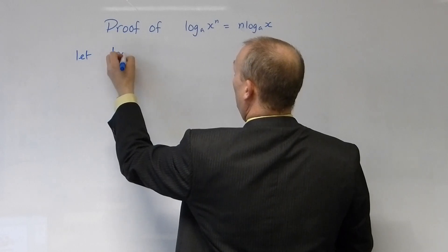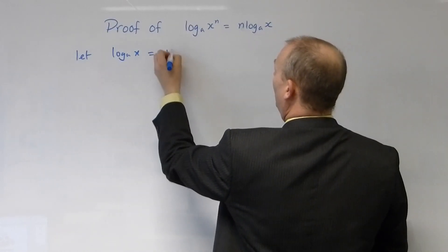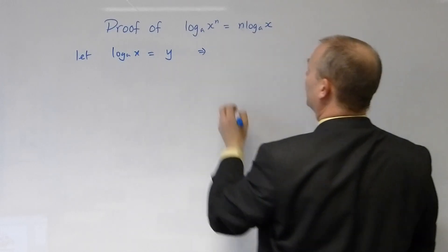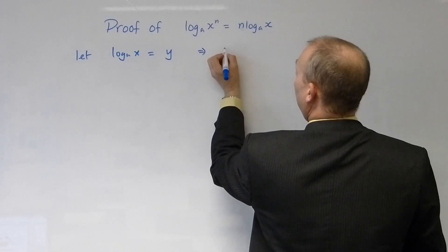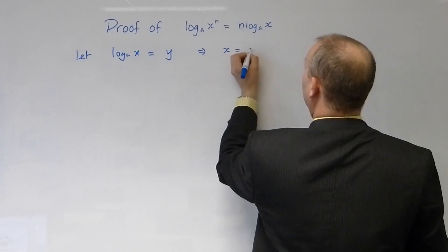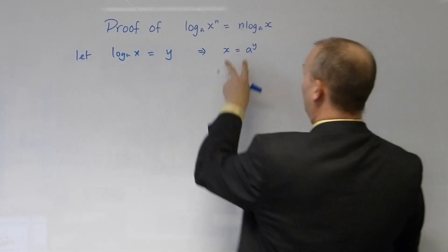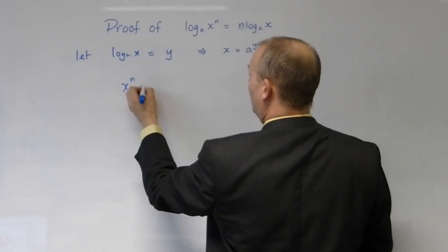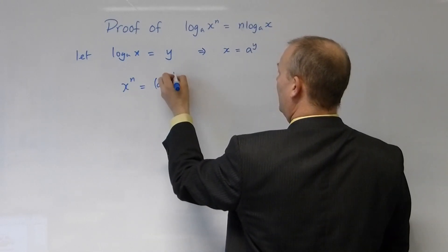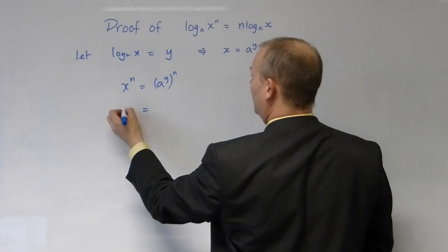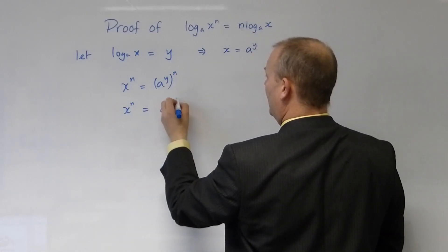Let the log of x equal y. That implies that x is equal to a to the power of y. We now take this and raise it to the power of n, and that's the same as a to the y to the power of n. Which means that x to the n is equal to a to the n times y.